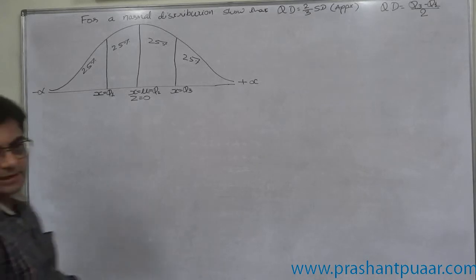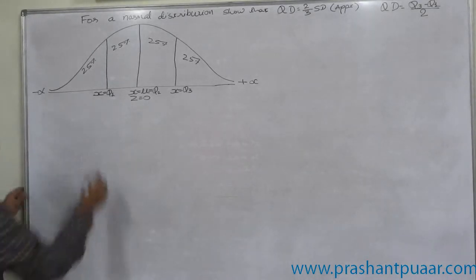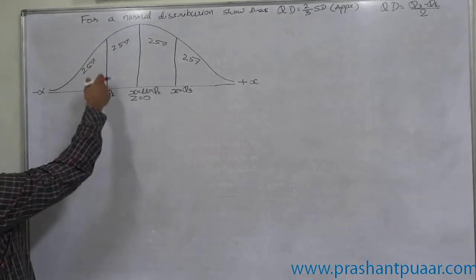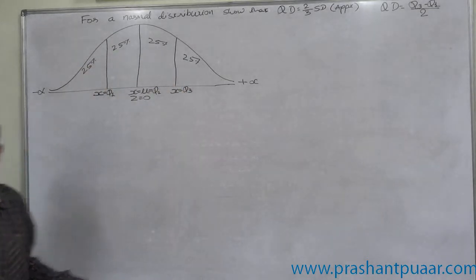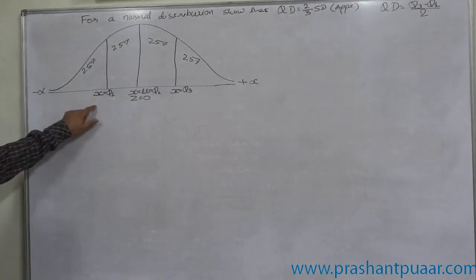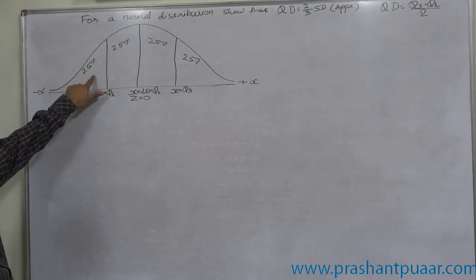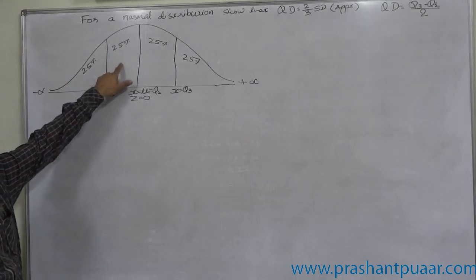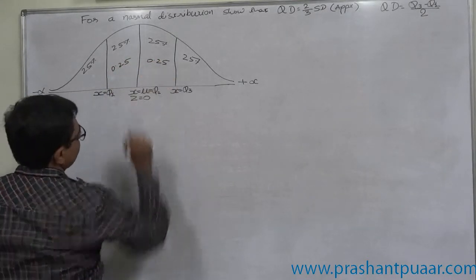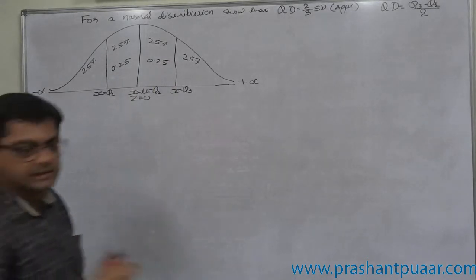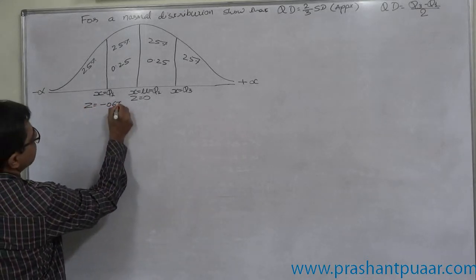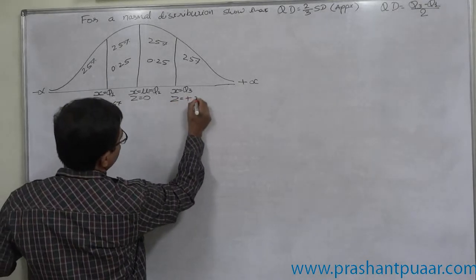The entire distribution is divided into four parts. We are interested in the z-score. For 0.25 of the area, z is 0.67, because there is 0.25 on each side — these two areas are used to find the z-score through the reverse process from the table. So z here is minus 0.67 and z here is plus 0.67.